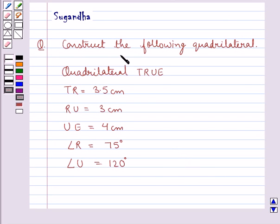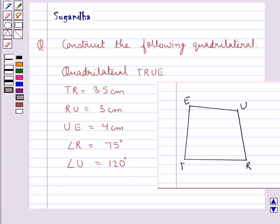The question says, construct the following quadrilateral, quadrilateral TRUE, where TR is 3.5 cm, RU is 3 cm, UE is 4 cm, angle R is 75 degrees and angle U is 120 degrees.